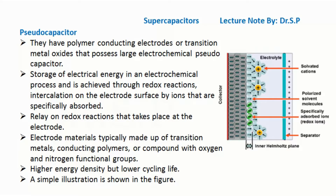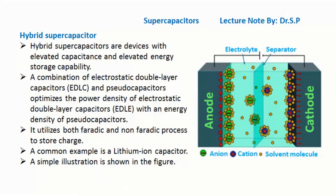Pseudo-capacitors rely on redox reactions that take place at the electrode. Electrode materials are typically made up of transition metals, conducting polymers, or compounds with oxygen and nitrogen functional groups. They offer higher energy density but lower cycling life. A simple illustration is shown in the figure.